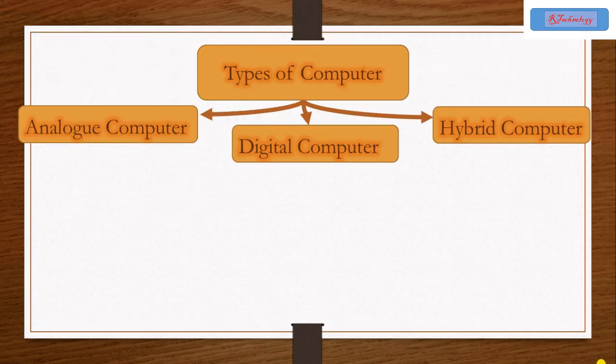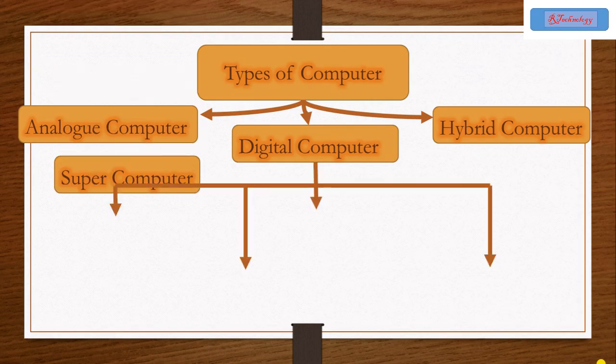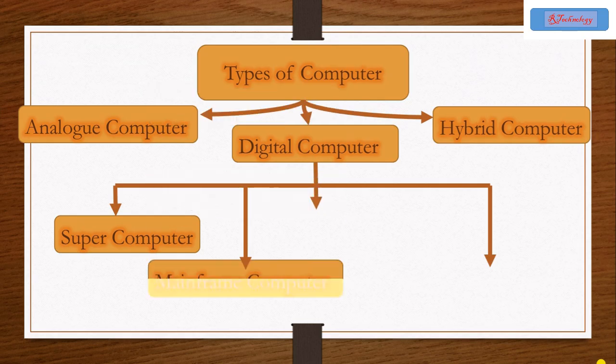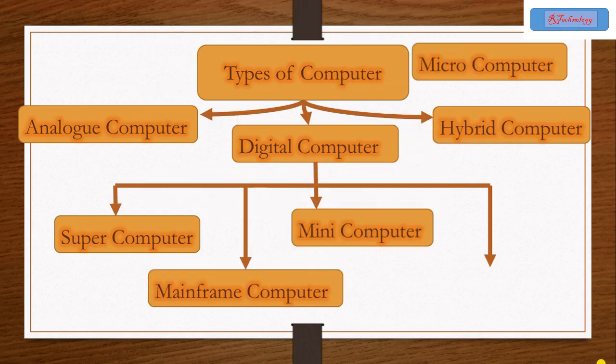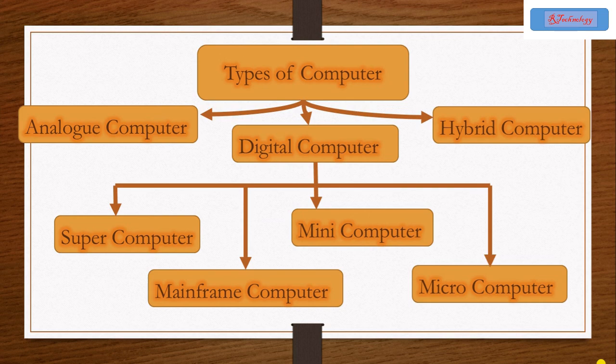second digital and third is hybrid computer. Now the digital computer further classified into four types: supercomputer, mainframe computer, mini computer and micro computer.